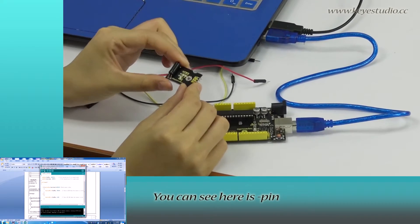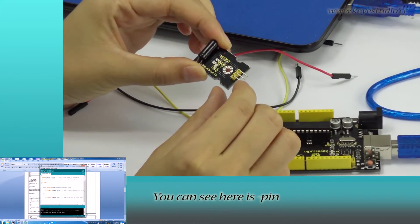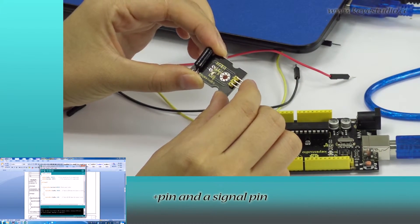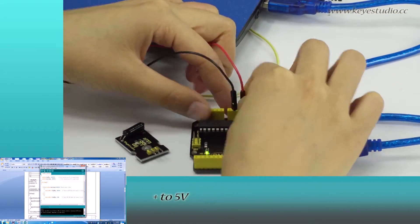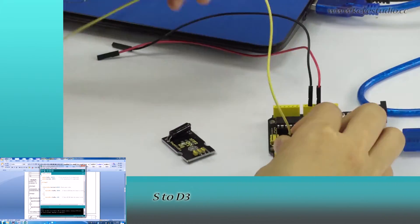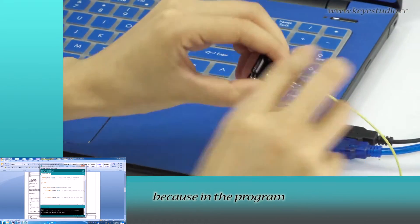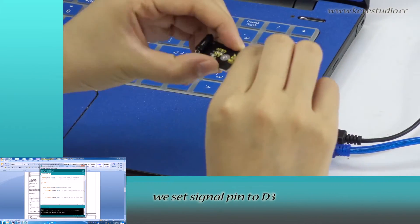let's do the wire connection. You can see here is negative pin, positive pin, and a signal pin. Connect negative to ground, positive to 5V, S to D3, because in the program, we set signal pin to D3.